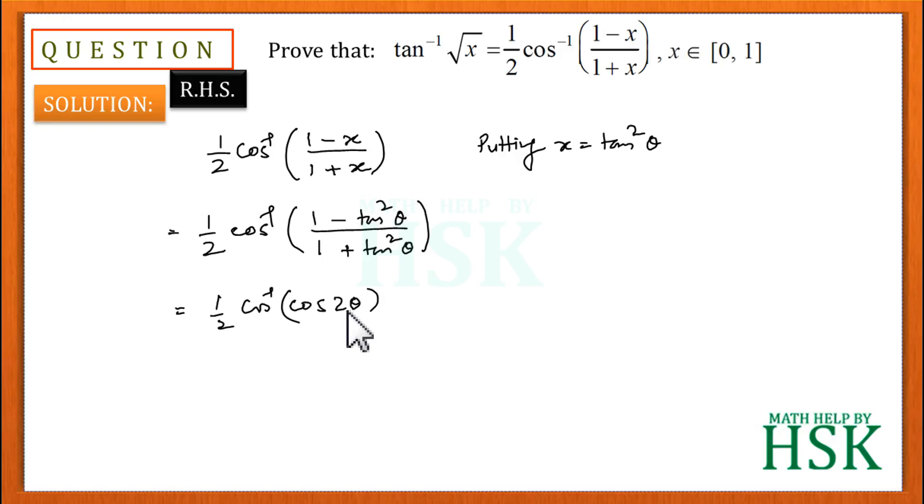Now you got an idea why it was placed here - because on placing x equal to tan square theta, (1 minus tan square theta) upon (1 plus tan square theta) was convertible into the form of cos 2 theta. Now cos inverse and cos are going to cancel out.